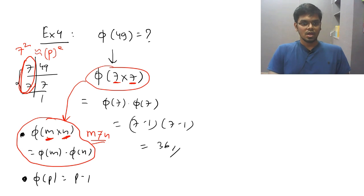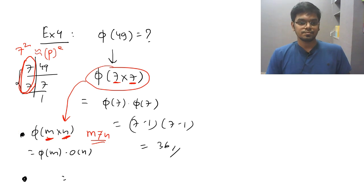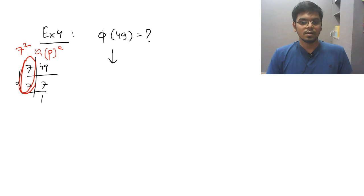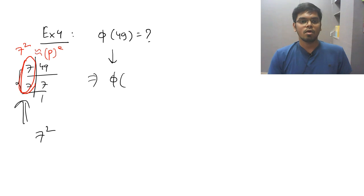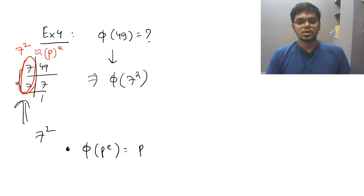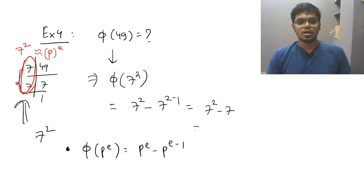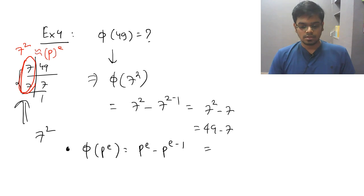This is the biggest mistake students make in exams. The correct approach: club the common part to get phi of 7 squared. Use property 3: phi of p to the power e equals p to the power e minus p to the power e minus 1. So the answer is 7 squared minus 7 to the power 1, which equals 49 minus 7, giving 42.